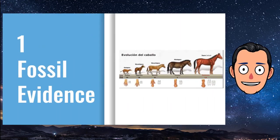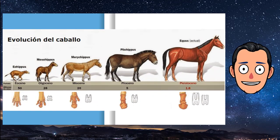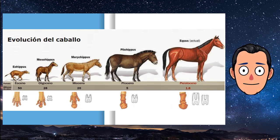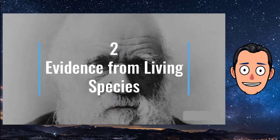Fossil Evidence provides clear evidence that evolution has occurred. An example is the horse. The oldest fossil horses were about the size of a fox and had four long toes. They became taller to help them see predators while feeding in tall grasses. They evolved a single large toe that became a hoof to help them escape predators. Their molars became longer and covered with cement that allowed them to grind tough grasses.